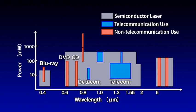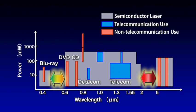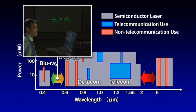This is a graph showing the output power of semiconductor lasers by wavelength. There are gaps in the visible light range from orange through to green and in the mid-infrared range from wavelengths two to five micrometers.